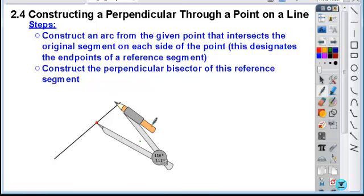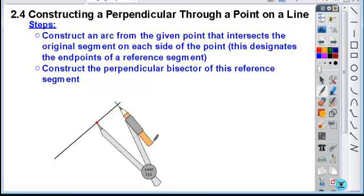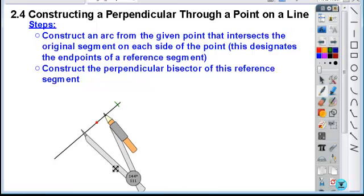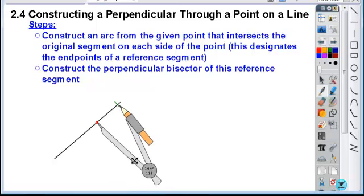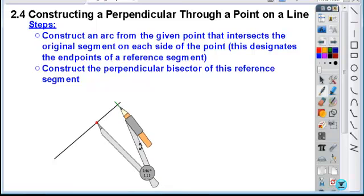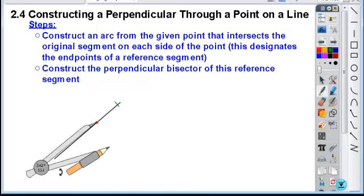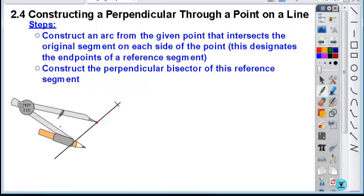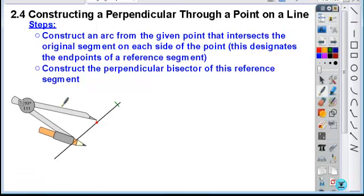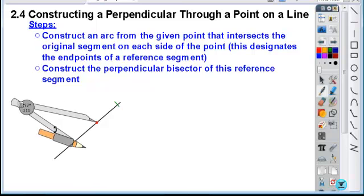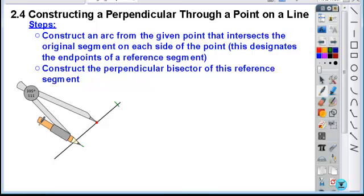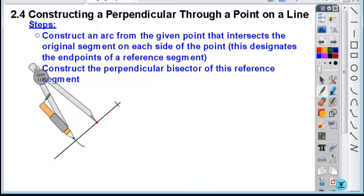So if I construct my arc to find the point, here's to the right of it, and then rotate it about keeping the compass measure the exact same.